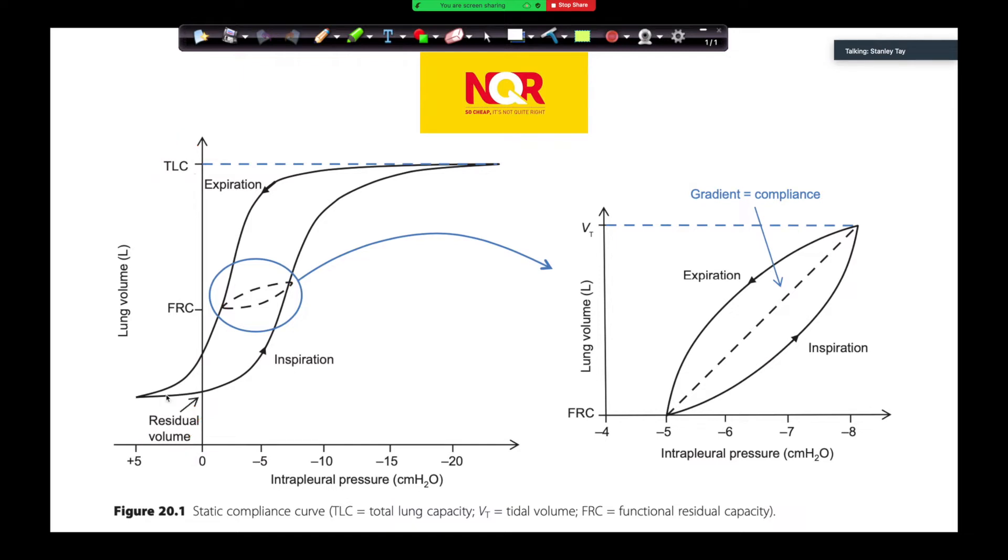Remember what I said that we're looking at two cycles. We're looking at inspiration and we're looking at expiration. When you're looking at inspiration, you're looking at the change from FRC to tidal volume. In other words, from here to here. And so the change in pressure is not from here to here. The change in pressure is from here to here. This is for a static compliance curve.